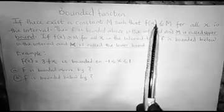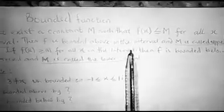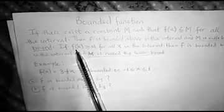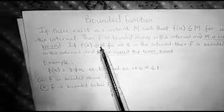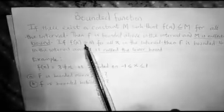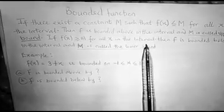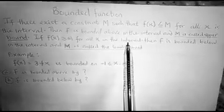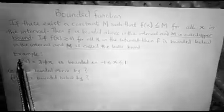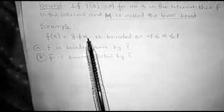So the same thing: if your f(x) is greater than M, your f is said to be bounded below and your M is called the lower bound. So here we have an example — given that f(x) equals 3 plus x.